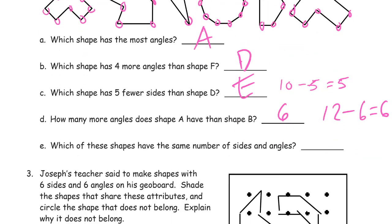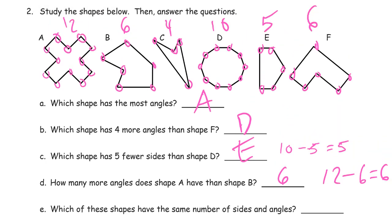Which of these shapes has the same number of angles and sides? Now, I think it's like, which two, which shapes have, they all have the same number of sides as they do angles. But which two have the same number of angles and sides as each other, I think is what the question is really asking. And I'm looking at B has six, and F also has six. So B and F.